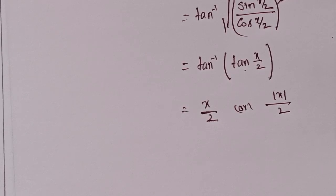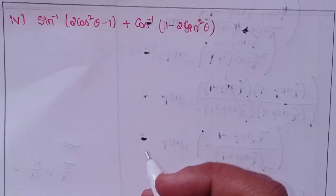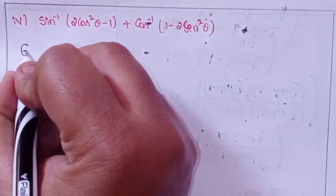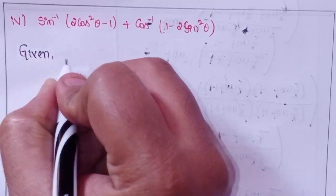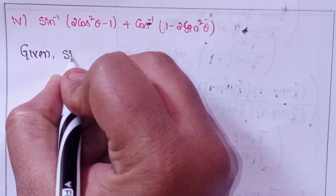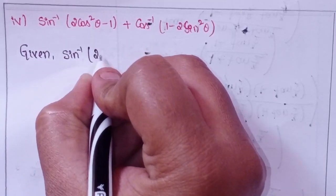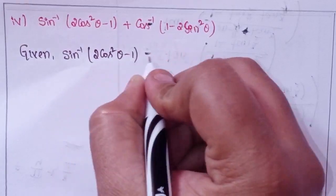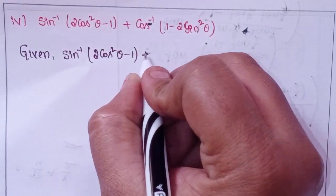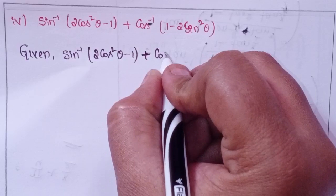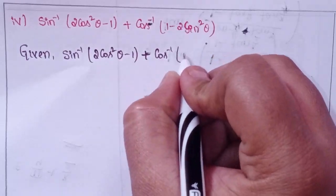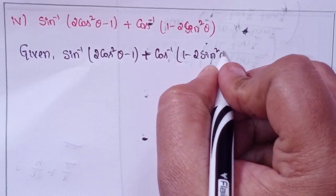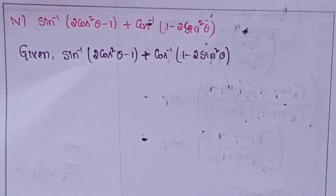Fourth one: given sin inverse of (2 cos²θ minus 1) plus cos inverse of (1 minus 2 sin²θ).